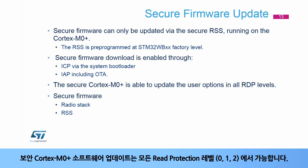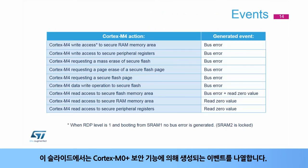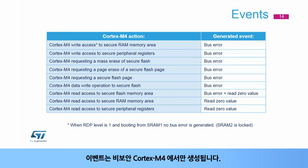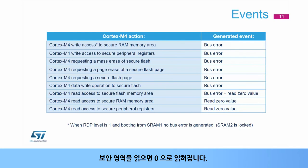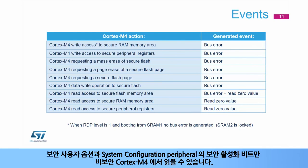Secure Cortex-M0 Plus software update is possible in all read protection levels: 0, 1, and 2. Events are only generated to the non-secure Cortex-M4. Depending on the Cortex-M4 access type, a bus error is generated to the non-secure Cortex-M4. Reading secure areas returns 0s. Only the secure user options and system configuration peripheral security enabled bits can be read by the non-secure Cortex-M4.